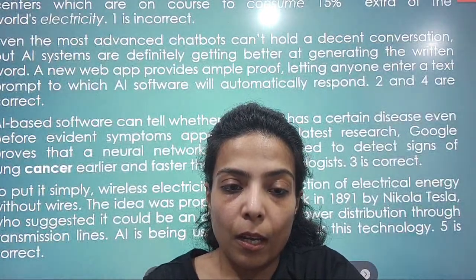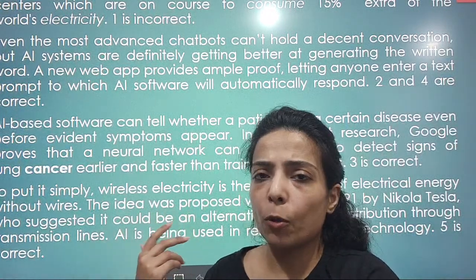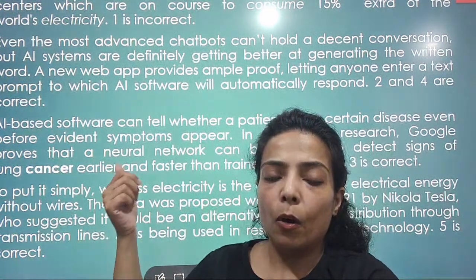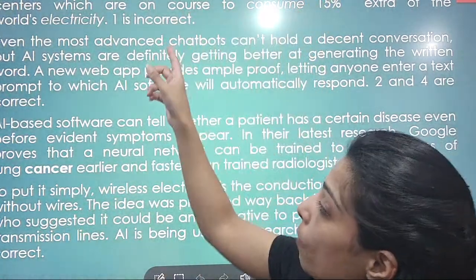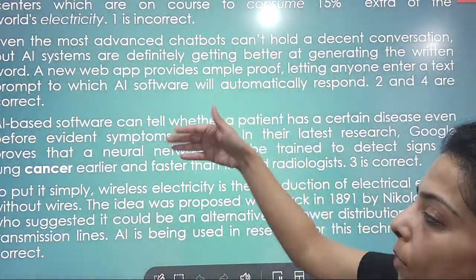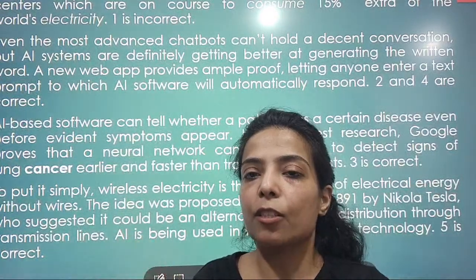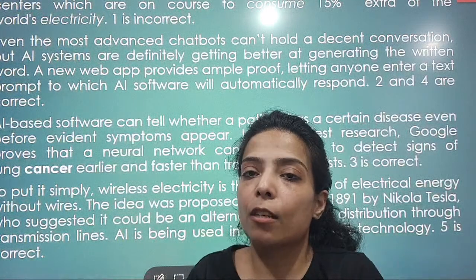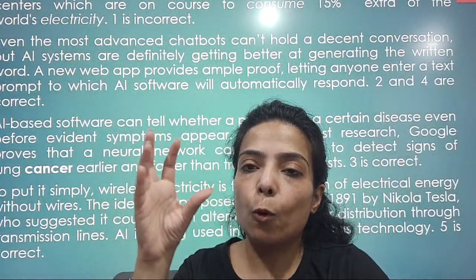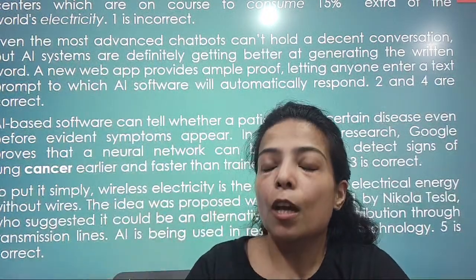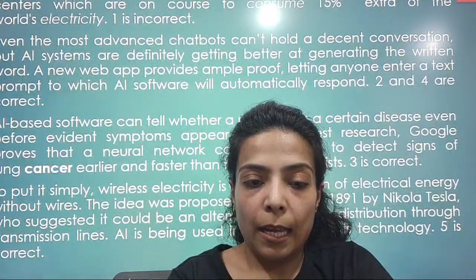We have already shared the keys with you, so I hope you will check those things. Today we will discuss the answers with you. Consumption is obviously not going to be less with AI. Artificial Intelligence and disease diagnosis are often done through software. Wireless electricity — meaning AI can manage systems without needing wires. So that option is also correct. The wireless electricity one. Let us move to the next question.